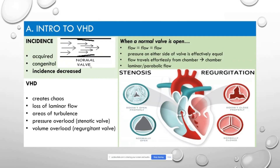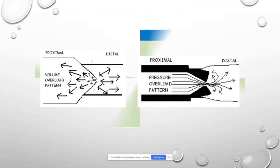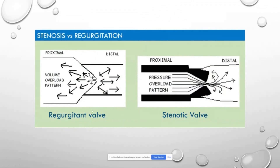When we have valvular heart disease it creates chaos—we lose that laminar flow and start having areas of turbulence where the flow is not steady. If the person has stenosis they're going to have pressure overload. If they have regurgitation they're going to have volume overload. With regurgitation, the blood leaves but then comes right back, and because blood is still coming in while some is returning, the chamber is going to enlarge—not thicken, just enlarge—to accommodate that extra blood.